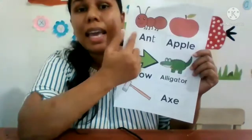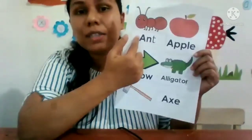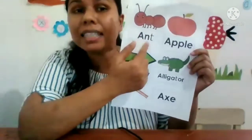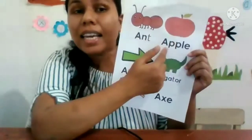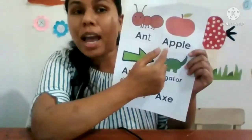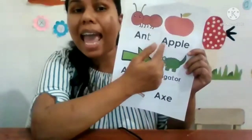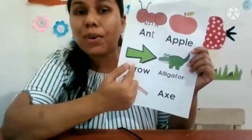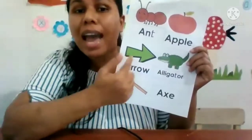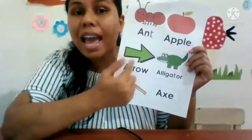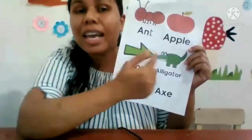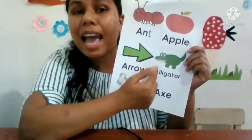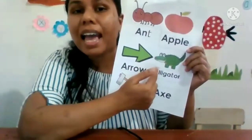A is for... A, A. And A is for apple — apple. A is for arrow. A is for alligator — alligator.